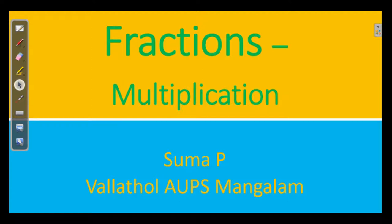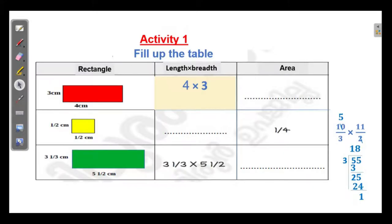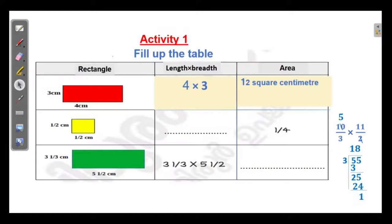Hi. Fractions. Let us do some problems on multiplication of fractions. We know the area of a rectangle is length into breadth. Here, a rectangle of length 4 cm and breadth 3 cm is given. Its area is 4 x 3 is equal to 12 square cm. The unit is cm x cm, that is square cm.